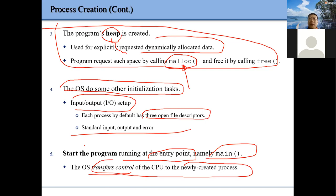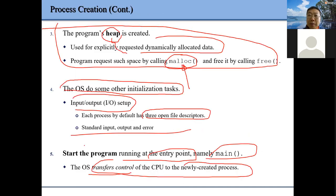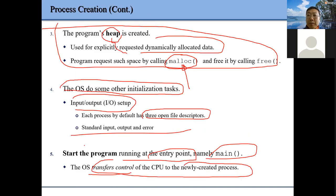I know this may not be clear, but I will discuss this in more detail next week. Generally speaking, when we create a process we have a new memory image — we call it the address space.